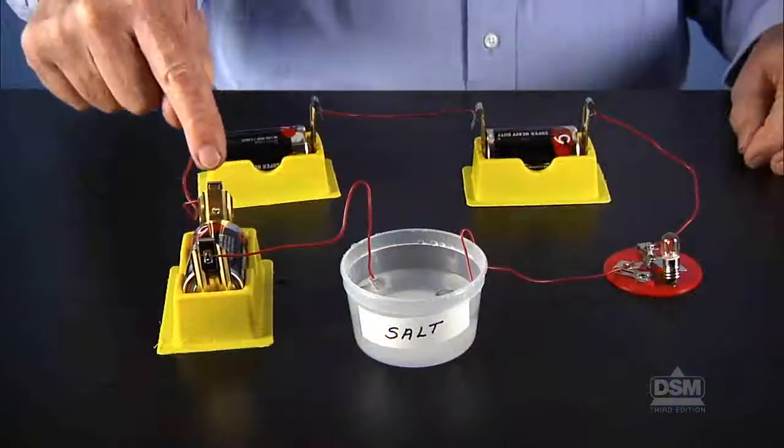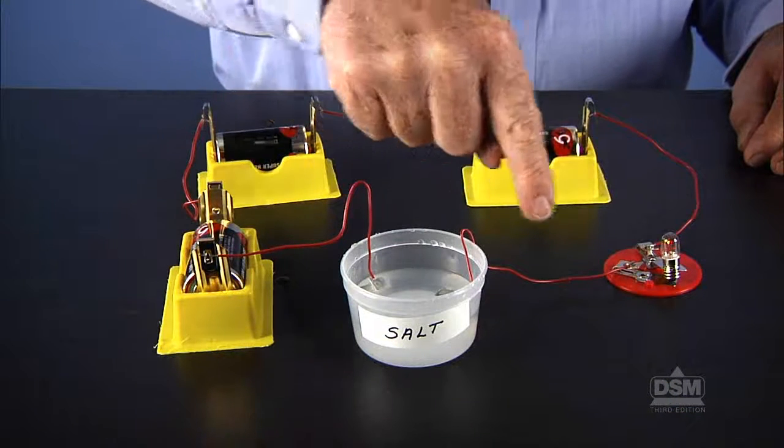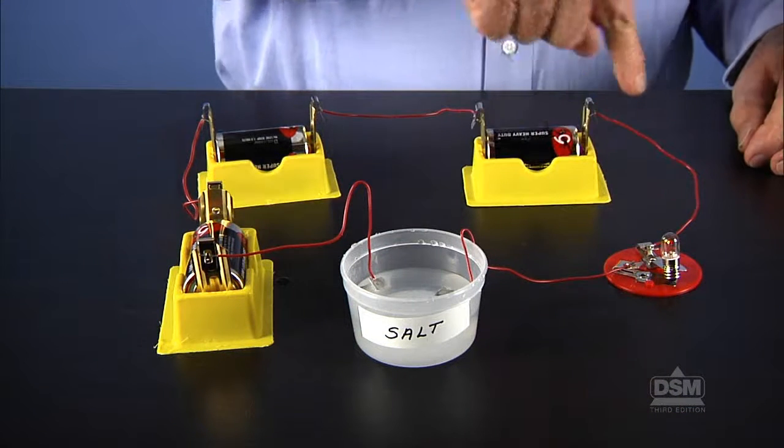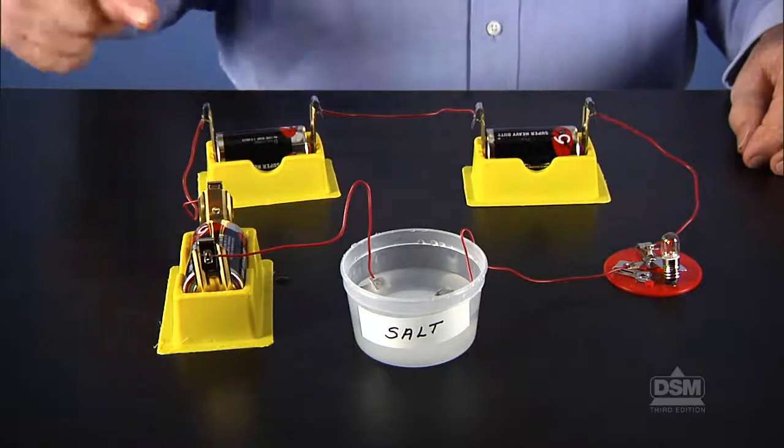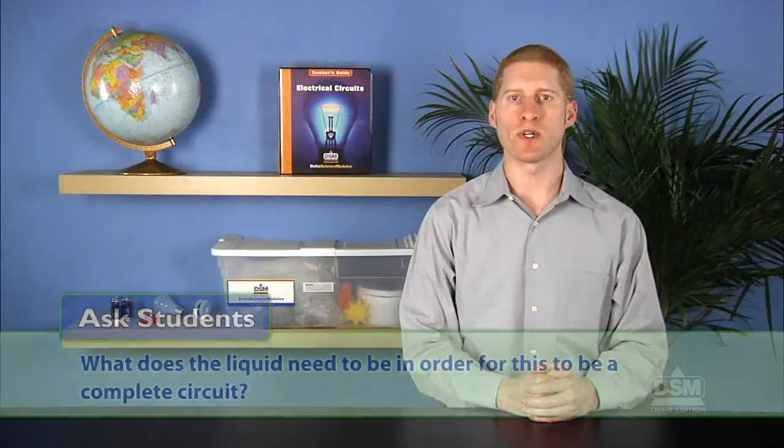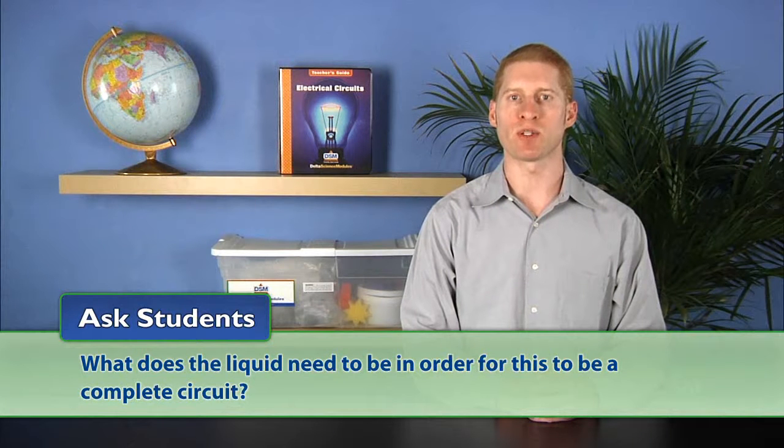Help students understand that the electric current flows from the negative terminal of a battery through the bulb to one Fondstock clip, through the liquid to the other Fondstock clip, and back to the positive terminal of the battery. Ask students: what does the liquid need to be in order for this to be a complete circuit? Students should understand that the liquid must be a conductor of the electric current.